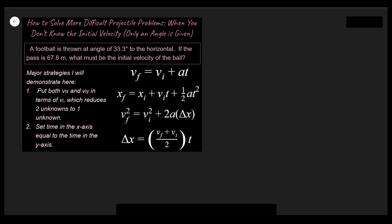So if a football is thrown at an angle to the horizontal, you know what the range is, but you don't know what the initial velocity is. And primarily I'm going to be demonstrating two strategies here. First, you're going to put both the v_initial in the x and v_initial in the y in terms of v_initial. And doing that is going to reduce two unknowns to one unknown.